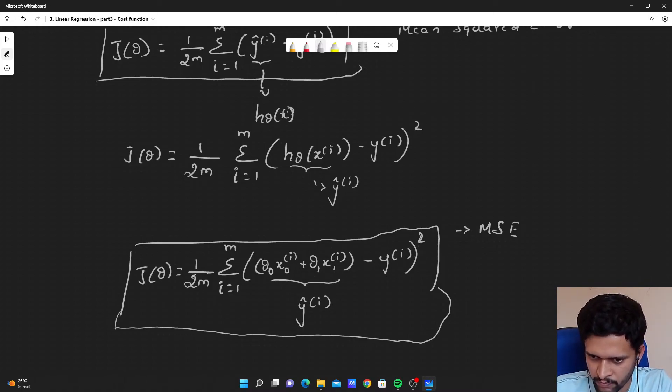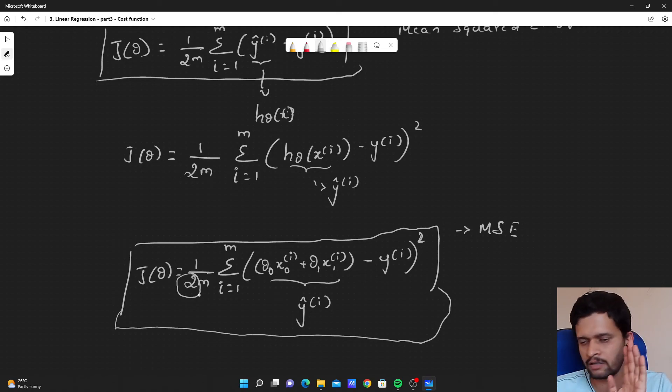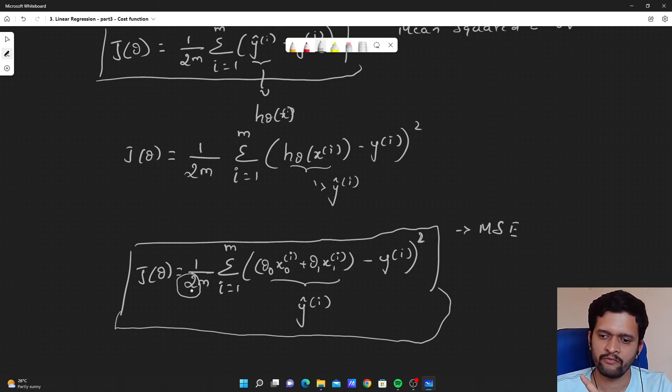And this 2 here, we are introducing for the purpose of simplification in mathematical calculation. Even if we do not have 2 and if we go on simplifying the cost function, it will do well. But in order to make it simple for our gradient descent algorithm, we introduce this 2 here. This is about cost function of linear regression, univariate linear regression.